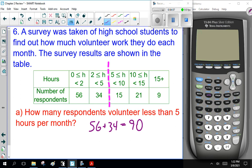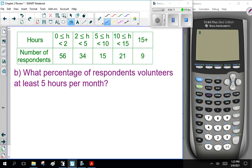Perfect. So far, so good? Last question. What percentage of respondents volunteer at least 5 hours per month? What percentage? That means total.